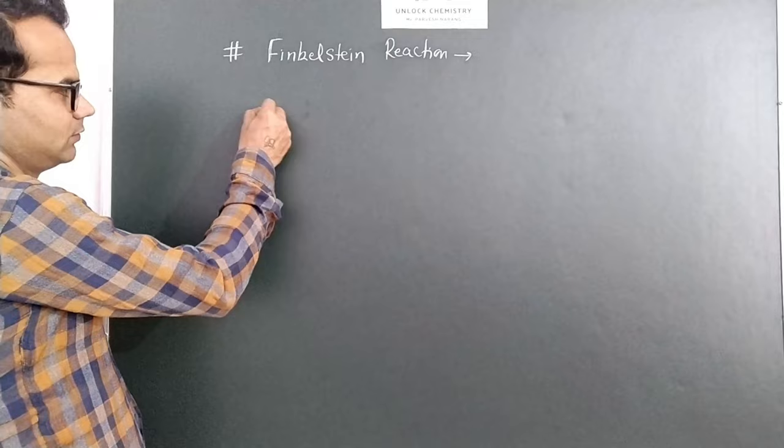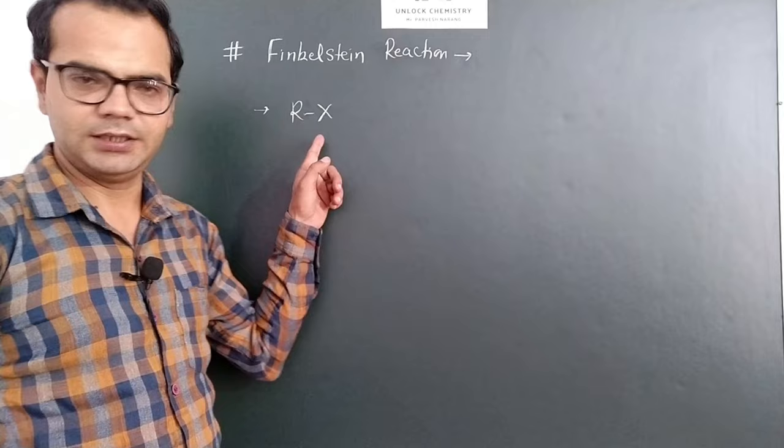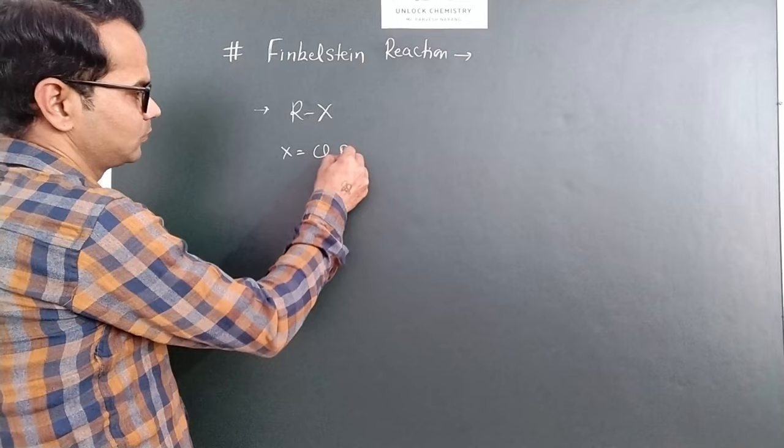This is the reaction of alkyl halide. R is the alkyl group, X can be chlorine or bromine.